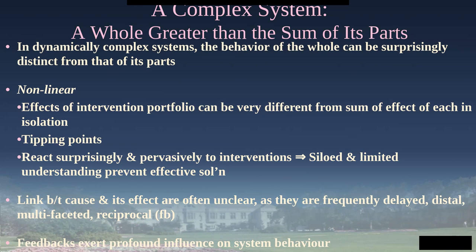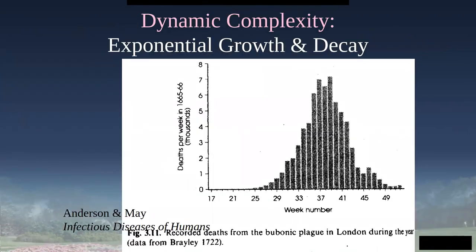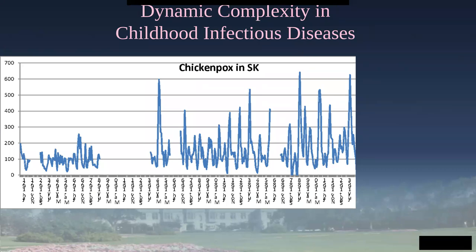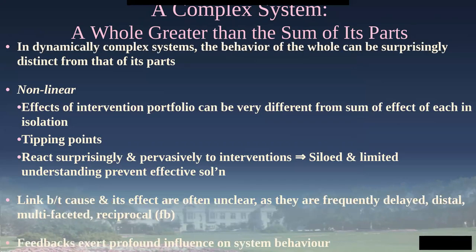A jumble of the pieces won't give rise to the distinctive behaviors we see writ large. Understanding each child in isolation or the stages of pertussis or chickenpox won't explain why we see those cycles — any more than understanding the axle types, engine types, and number of doors on each car in an area of roadway will help you understand why there's a traffic jam there. A traffic jam, like those cycles and bell curves in infectious disease, is something more than the pieces — it's a collective phenomenon.